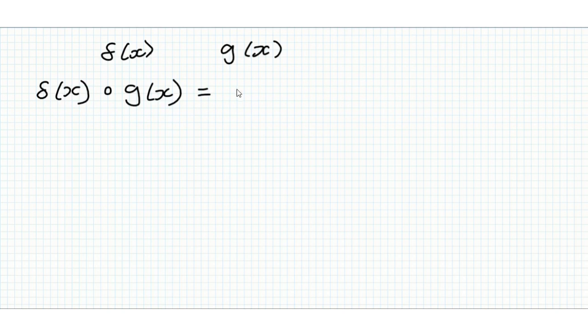So say we have two functions, one function f of x and one function g of x, and we want to combine these two functions. We can do that with something called function composition. And we denote that with this little circle here. And f of x composed of g of x is equal to f of g of x.